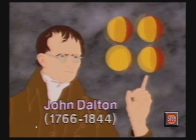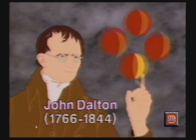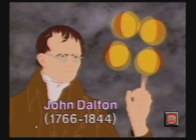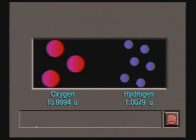John Dalton, an English chemist, proposed a new model of the atom in 1803 to explain these two laws. He suggested that each element is made up of identical particles called atoms. Atoms are tiny, indivisible, solid spheres like billiard balls or marbles. Atoms in one element differ from atoms in another element by their atomic mass.